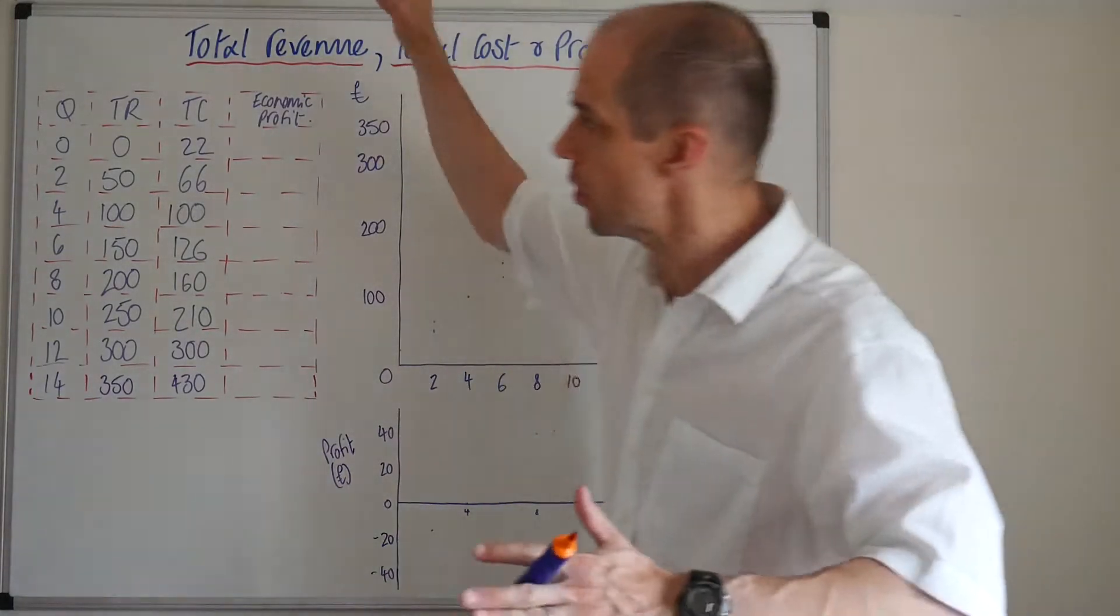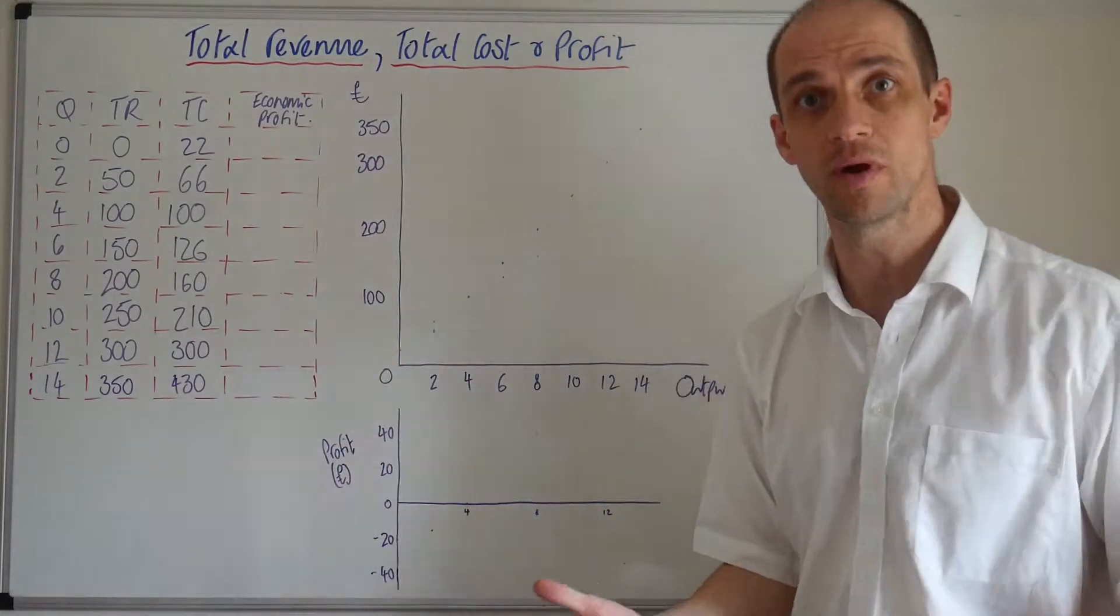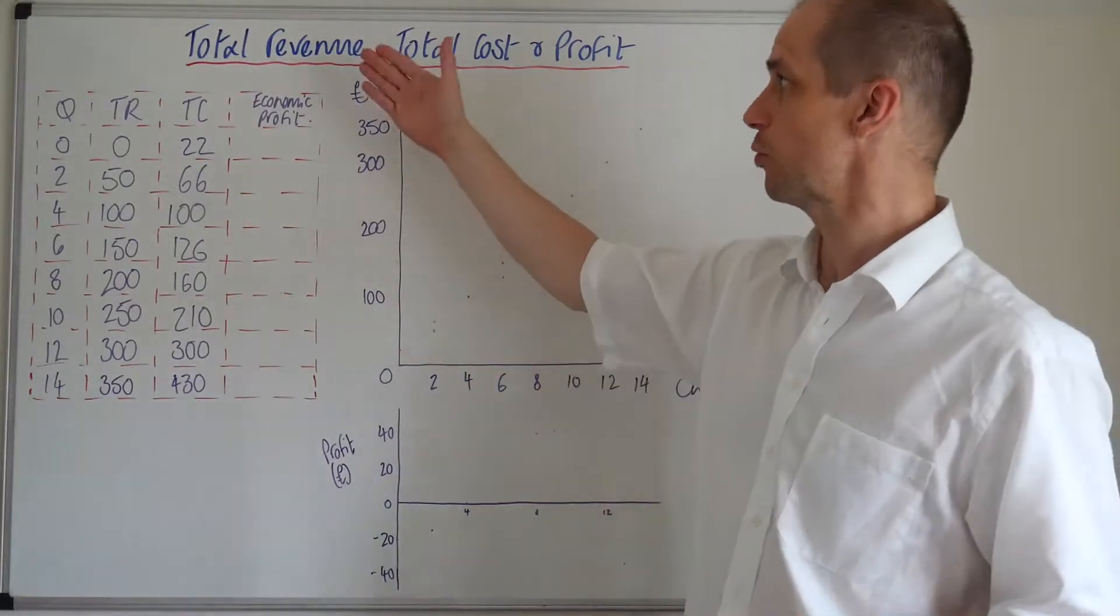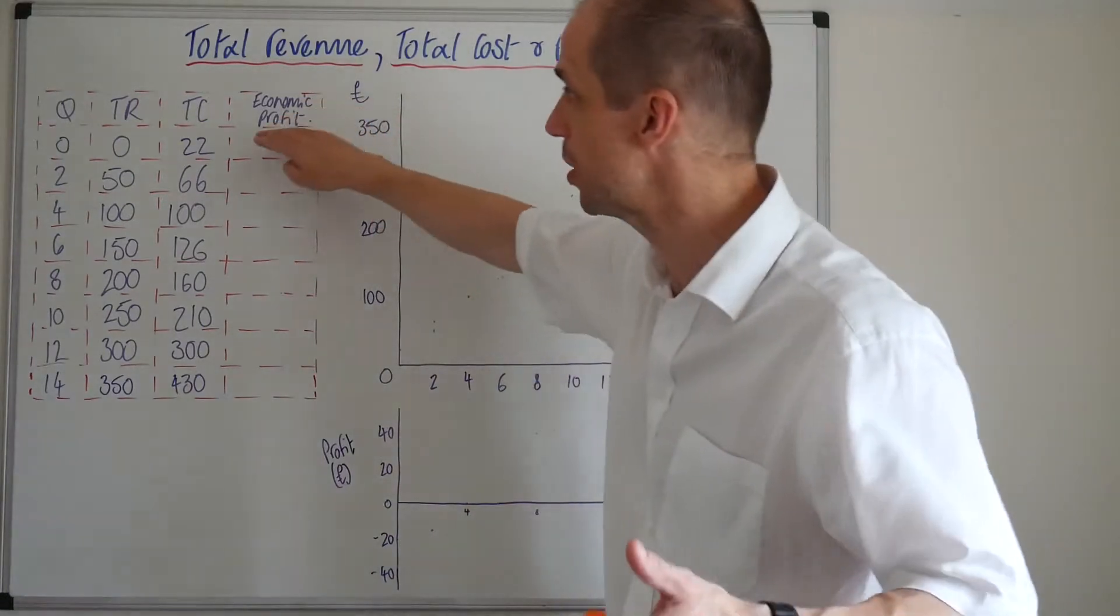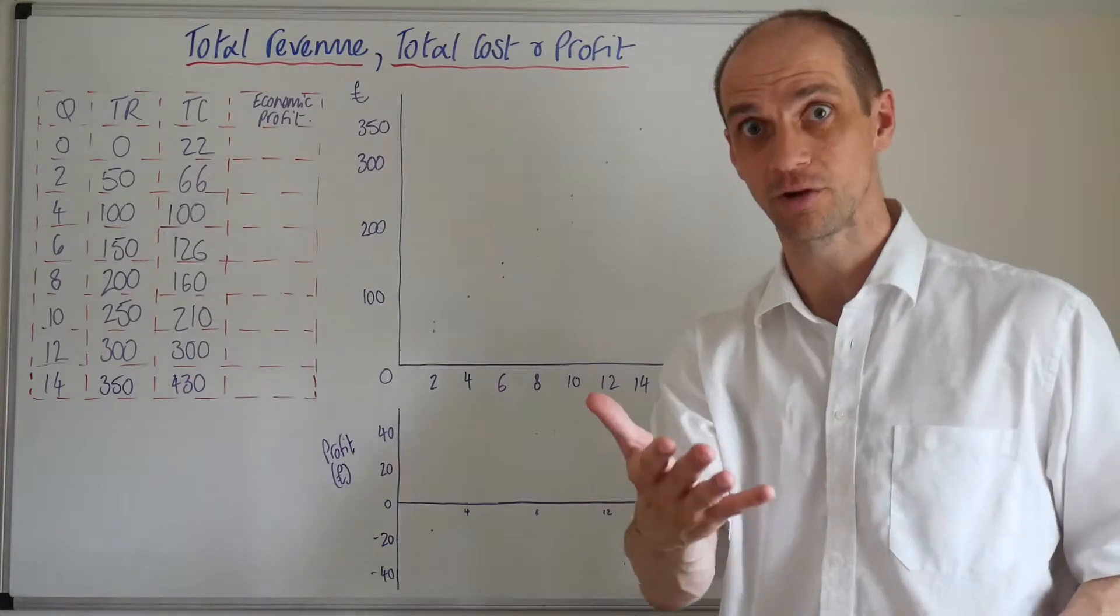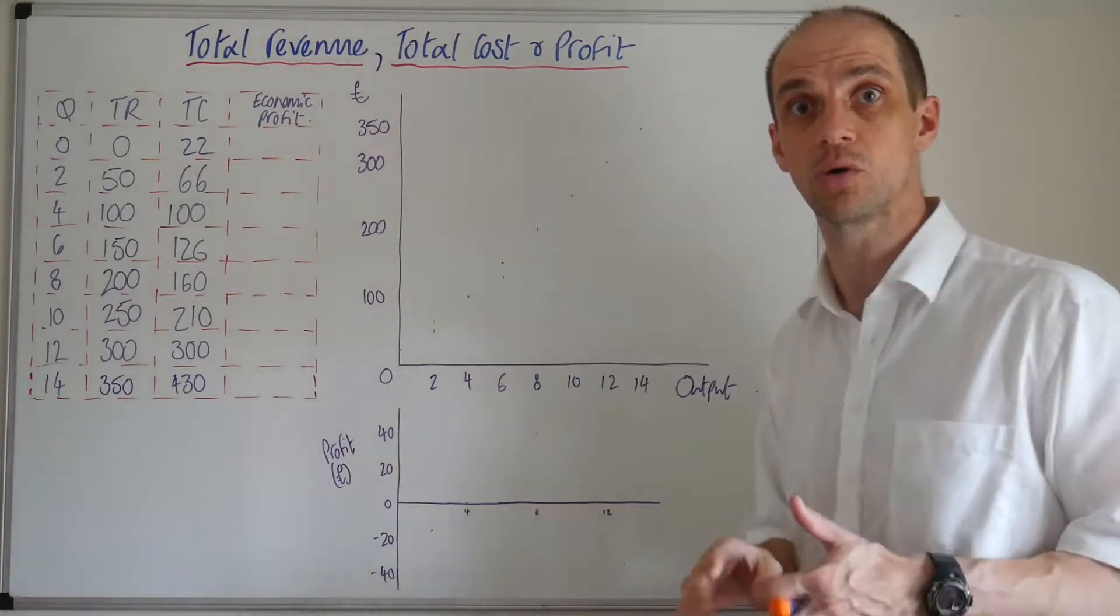Okay, so we've got a table drawn out here which is just looking at our total revenue and total cost situation for this given firm. We've then got our economic profit that we're calculating, so remember that is your total revenue minus your total cost, which in economic theory should therefore include your opportunity cost as well.